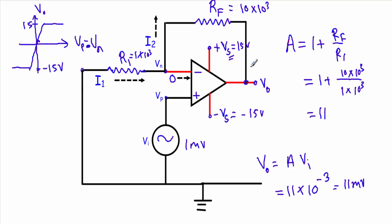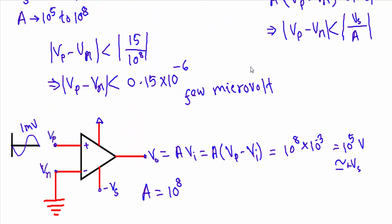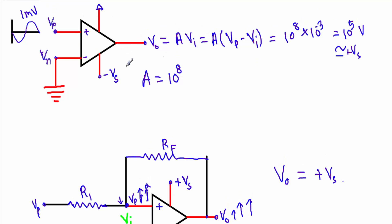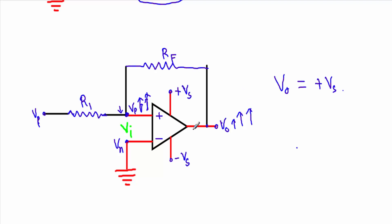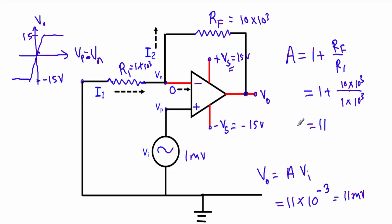To conclude: when the op-amp is in open loop or positive feedback, the high gain drives the output to either positive or negative saturation. In positive feedback, any increase in output increases VP, pushing the amplifier further into positive saturation, and vice versa. But in the case of negative feedback, if the output voltage is between the positive and negative saturation voltages, the op-amp operates in the linear region. Thank you.